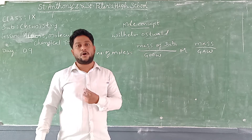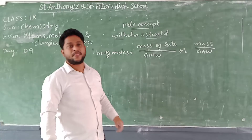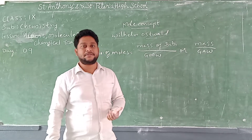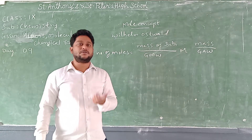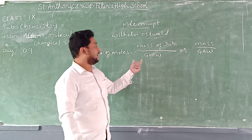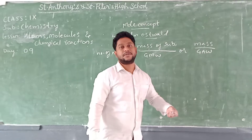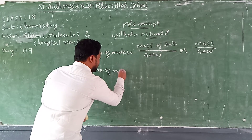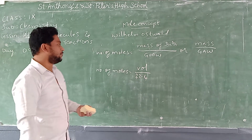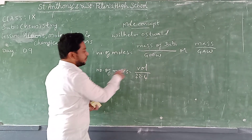If the question involves a molecule, use gram molecular weight. For example, oxygen gas is written as O₂ — it is a molecule, so use mass ÷ gram molecular weight. If the question involves a single oxygen atom (O), it is an element, so use mass ÷ gram atomic weight. For O₂ use gram molecular weight; for 2O use gram atomic weight. When volume is provided: number of moles = volume ÷ 22.4 liters.